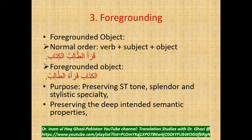Another example of foregrounding is the foregrounded object. The normal order is verb-subject-object, for example 'the student read the book.' When the object is foregrounded, it becomes first: 'the book is read by the student' or 'it is the book that the student reads.' The purpose of this change in normal sentence order is to preserve the textual splendor and stylistic speciality in translation and to preserve the deep intended semantic properties.